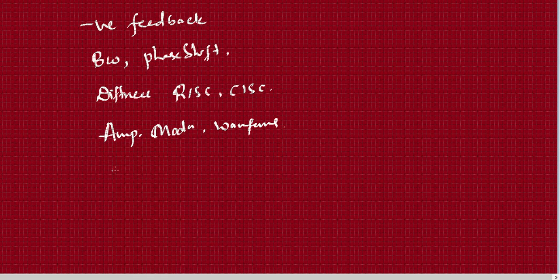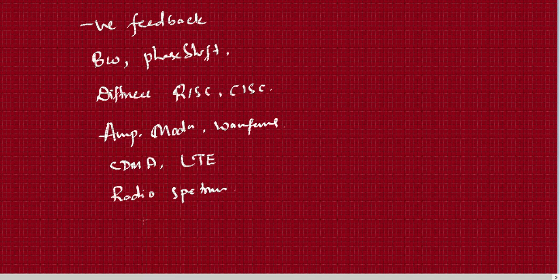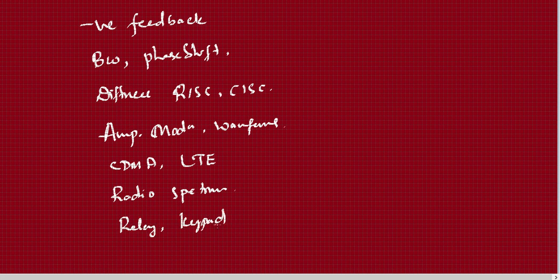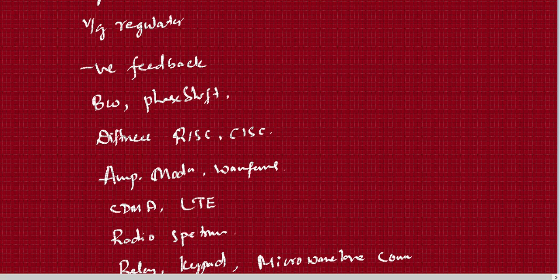In 3G and 4G, GSM architecture is there in 2G, CDMA is there, and LTE along with the evolution of LTE is also important. Radio spectrum is important. Transducers and sensors — relay and keypad — in Module 3 are also very important. Finally, microwave communication in the last chapter is another expected topic.